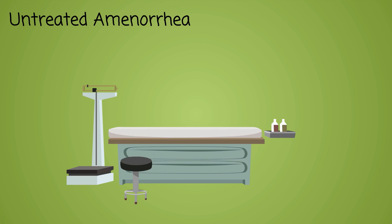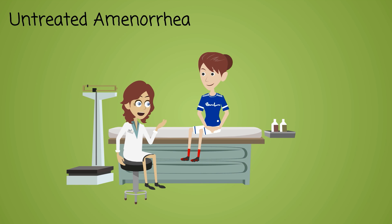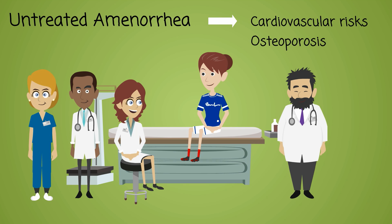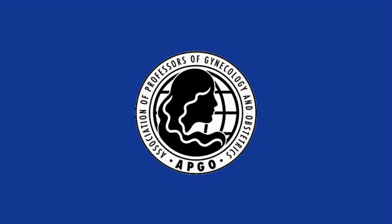The consequences of untreated amenorrhea depend on the underlying etiology. For women with the athlete's triad, issues may include disordered eating patterns, body image issues, and bone health, potentially requiring a multidisciplinary team with cognitive behavioral therapy. The long-term consequences can involve cardiovascular and osteoporosis risk from years of low estrogen exposure. This concludes the APCO educational video on amenorrhea, having discussed many of the causes, evaluation, and treatment options for this condition in women.